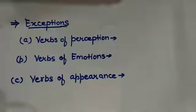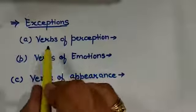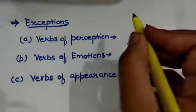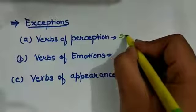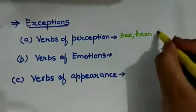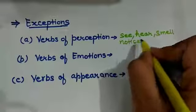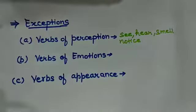Now, let us see the exceptions in case of present continuous tense. A few verbs are not used in the continuous form. That means they don't possess ing form. Such verbs are verbs of perception. Verbs of perception can be see, hear, smell and notice. These kinds of verbs are not used in the continuous form.